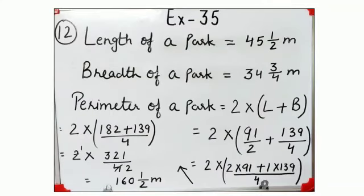Look at question number 12. Find the perimeter of rectangular park whose length and breadth are 45 and 1 by 2 meters and 34 and 3 by 4 meters. Length of park given is 45 and 1 by 2 meters. Breadth is 34 and 3 by 4 meters. The formula of perimeter of rectangular park is 2 multiply length plus breadth.